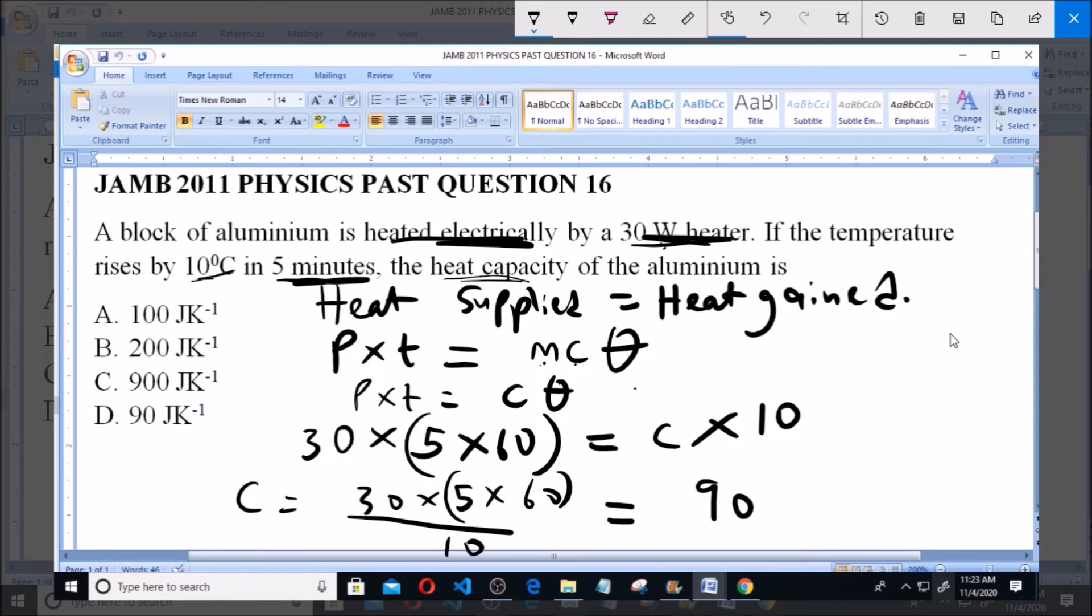And this is equal to 900 joules per Kelvin. 900 joules per Kelvin is option C, which is the correct answer to this question.